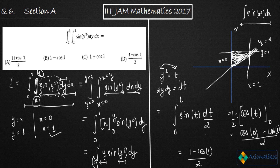Using a black pen to mark the answer: option D, which is (1 minus cos 1) over 2, is the correct option. Options A, B, and C are all incorrect. Thank you.